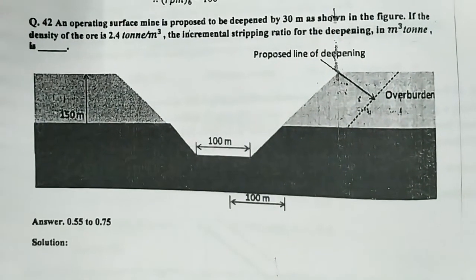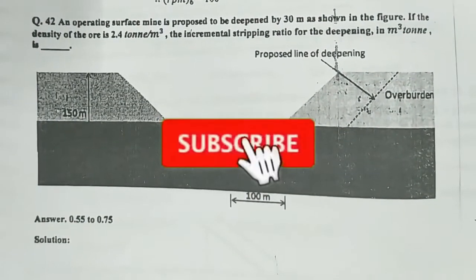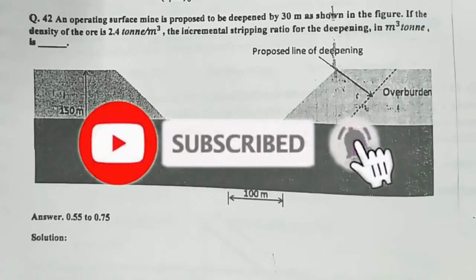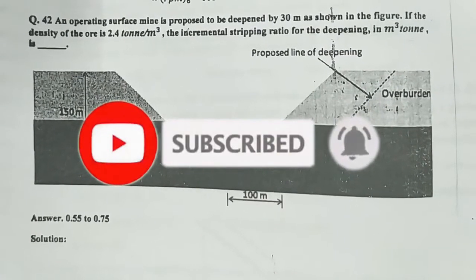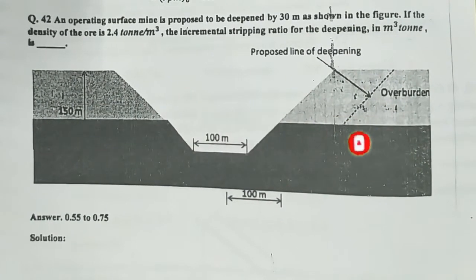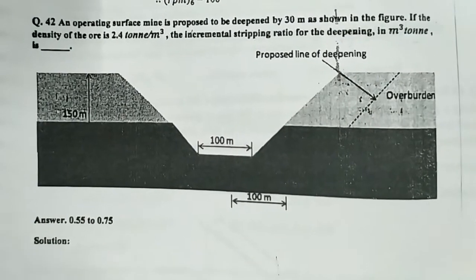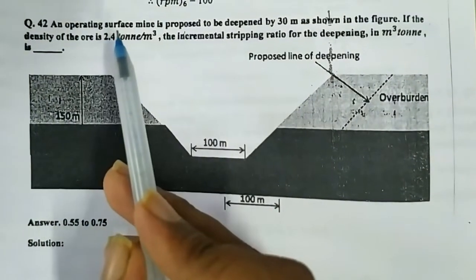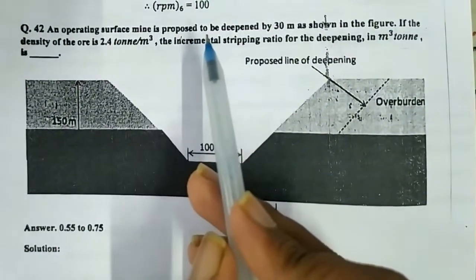Hi friends, this is Tilak Tipa, team member of Mining Ebooks. Today we will discuss a topic on surface mining. The subtopic is stripping ratio. Let me start the problem here. An operating surface mine is proposed to be deepened by 30 meters as shown in the figure.